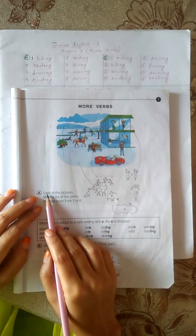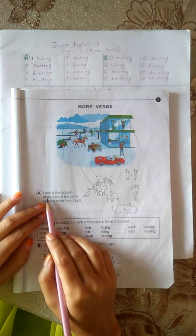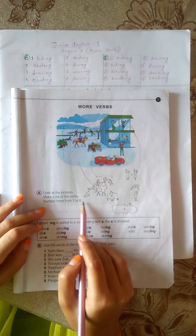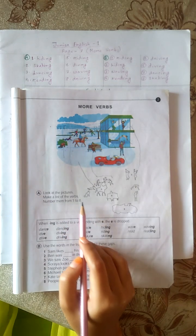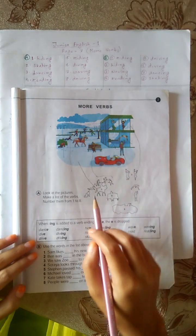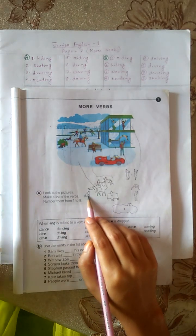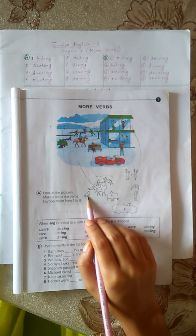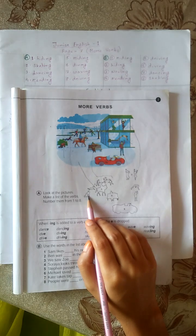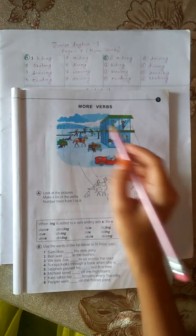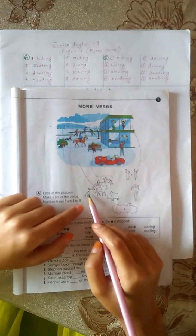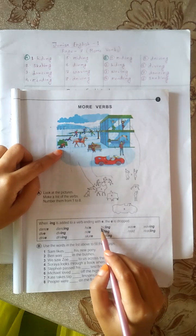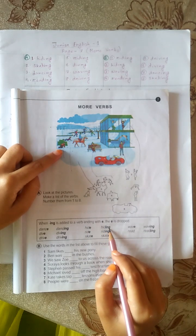Let's go exercise 1. A. Look at the pictures, make a list of the verbs, number them from 1 to 8. Number 1. It is a picture but we don't understand what is it. We need to go to the main picture. Number 1, hiding.